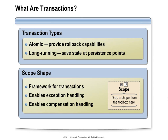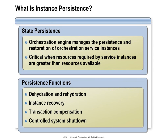I showed you an animation in Module 8 that described how the orchestration engine will serialize an instance of an orchestration to the database if it doesn't have any work to do, so it can free up memory resources for another orchestration. That process was known as dehydration. And then once a message came in for the dehydrated orchestration to process, the orchestration engine would rehydrate that instance and let it get its work done. So that's one example of orchestration persistence.